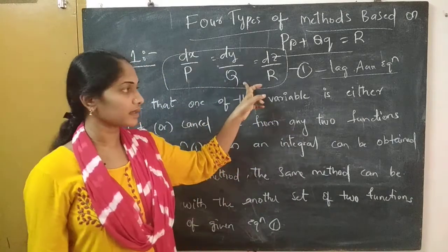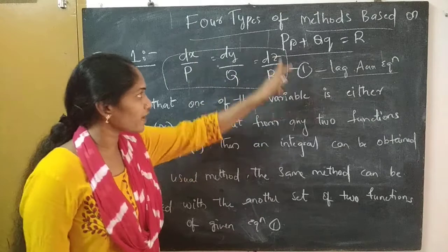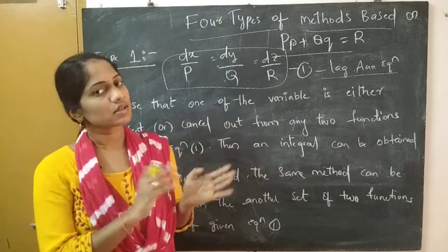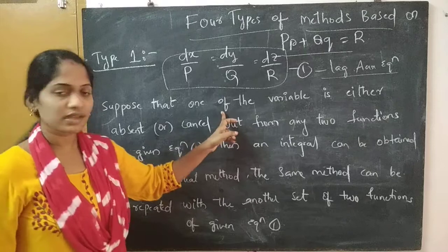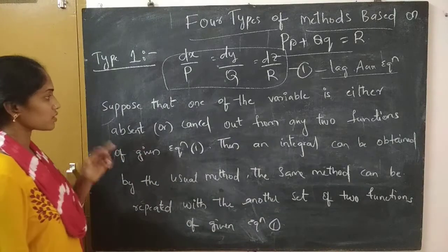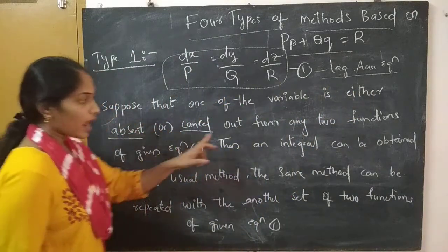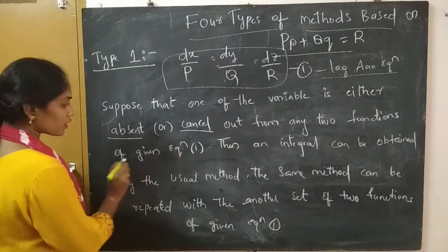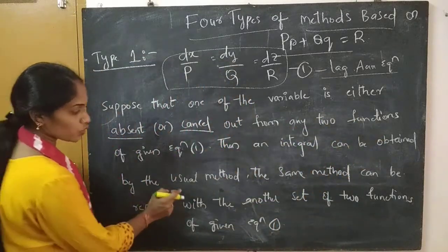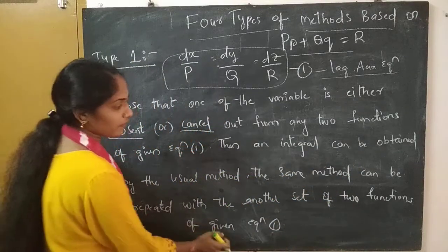After writing the auxiliary equation, you consider how the fractions or functions appear. For Type 1: suppose that one of the variables is either absent or cancels out from any two functions of the given equation. Then an integral can be obtained by the usual method. The same method can be repeated with another set of two functions of the given equation.